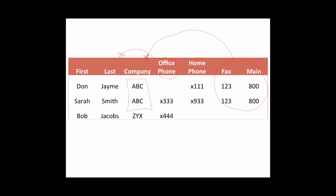Whenever you have something like this happen, you start having problems in the data. Assume, for example, that Don calls in saying ABC has changed their fax number. Your intern goes in, pulls up his record in Excel, and changes the fax number. However, Sarah might be forgotten because the intern only updated Don's record. In addition, with very large data sets, this is very inefficient as you're storing the same data multiple times. The solution is to pull out the fax, main, and company fields to eliminate this redundancy.